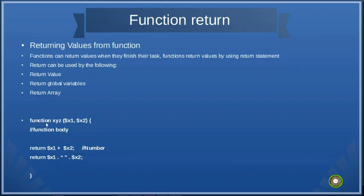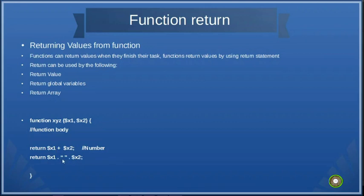So imagine you've got a function XYZ with parameter 1 and parameter 2 and whatever statements you're going to put inside. You can return a value — for example, value 1 plus value 2 for numeric. If you want to perform addition, subtraction, multiplication, you can do it here. Or if you want to do concatenation with a string, you can do your concatenation here. So you can return global variables or you can return an array.